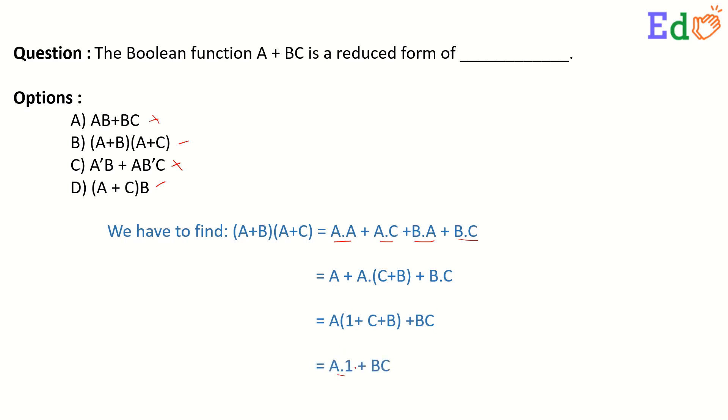So the Boolean function A plus BC is a reduced form of option B, (A plus B) dot (A plus C). Thank you.